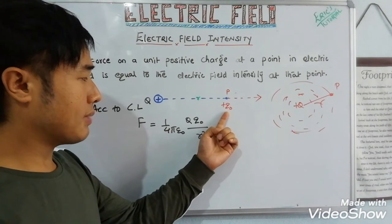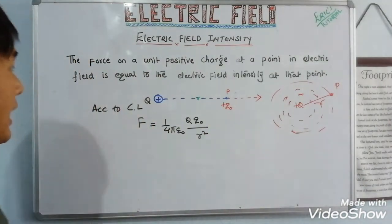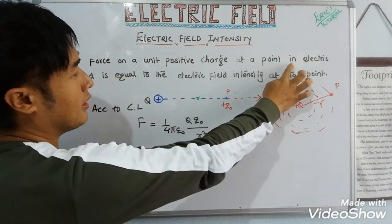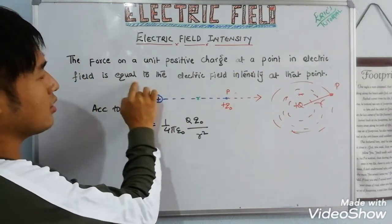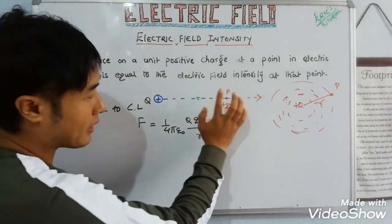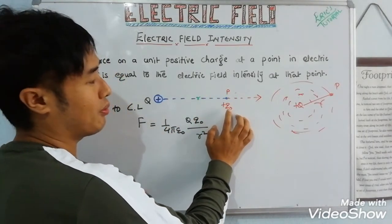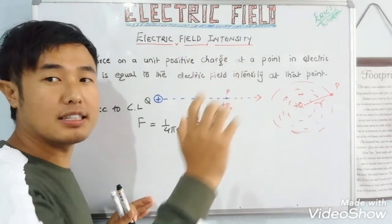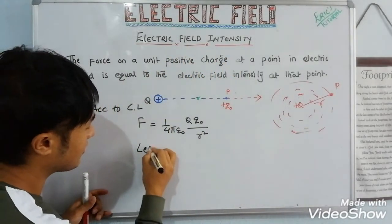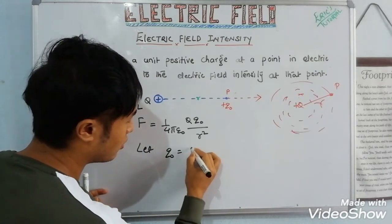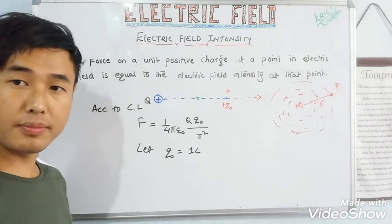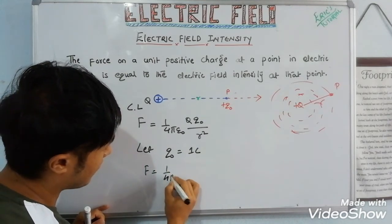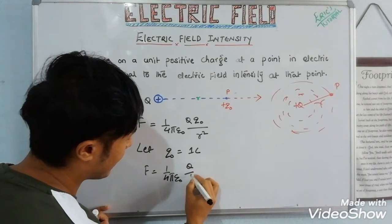At point P, the force on the test charge has a certain magnitude. The definition of electric field intensity states: the force on a unit positive charge at a point in an electric field is equal to the electric field intensity. If we let q₀ equal 1 coulomb — that is, a unit positive charge — then F = (1 / 4πε₀) × q / r².